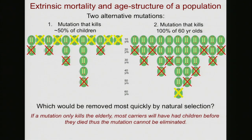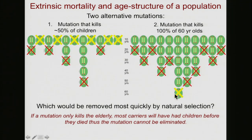If a mutation only kills the elderly, most carriers will have already had their children and died from other causes, so the mutation cannot be eliminated. A lot of others might carry the same mutation but died from other causes, so the genes are now safely in the next generation. Only a few unfortunate individuals who actually had the good luck to live to an advanced age will suffer from these mutations.